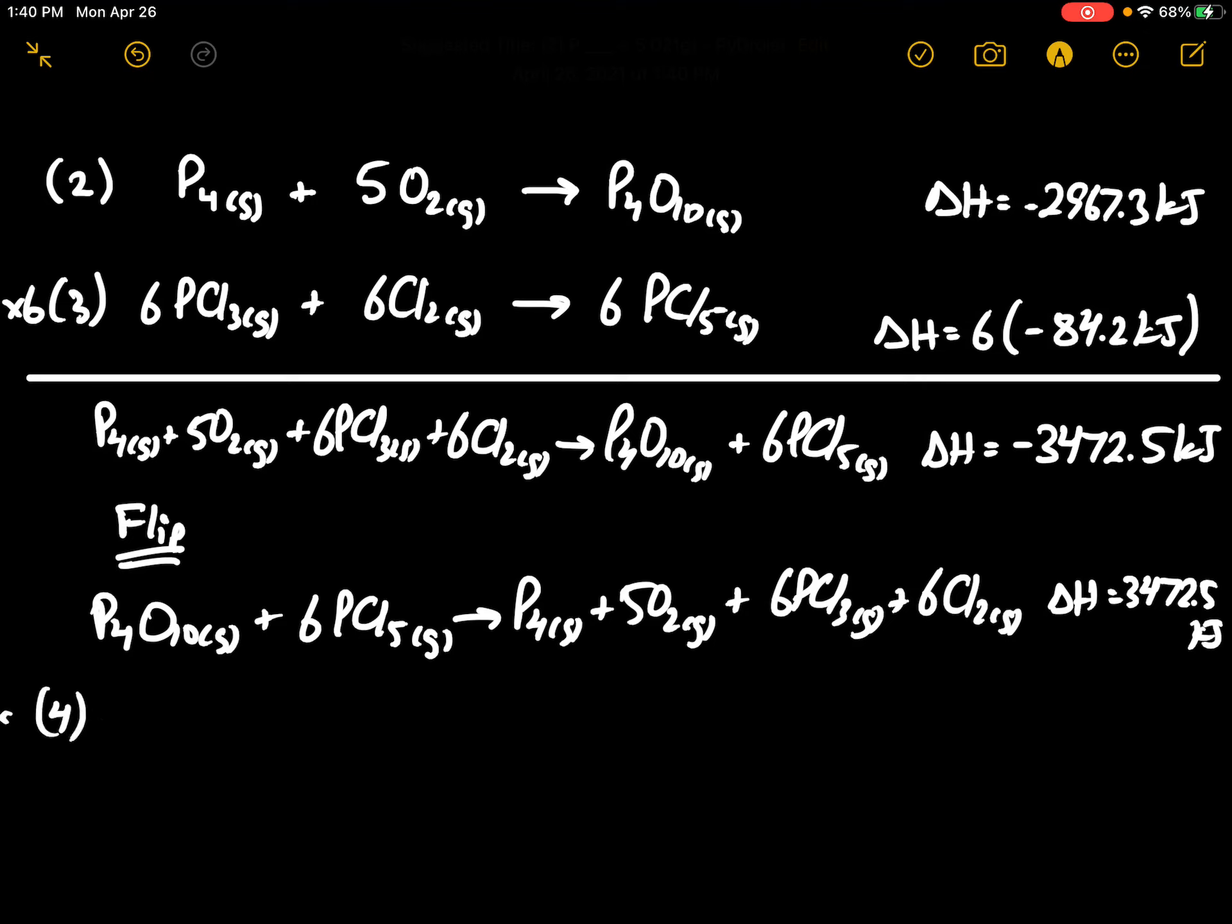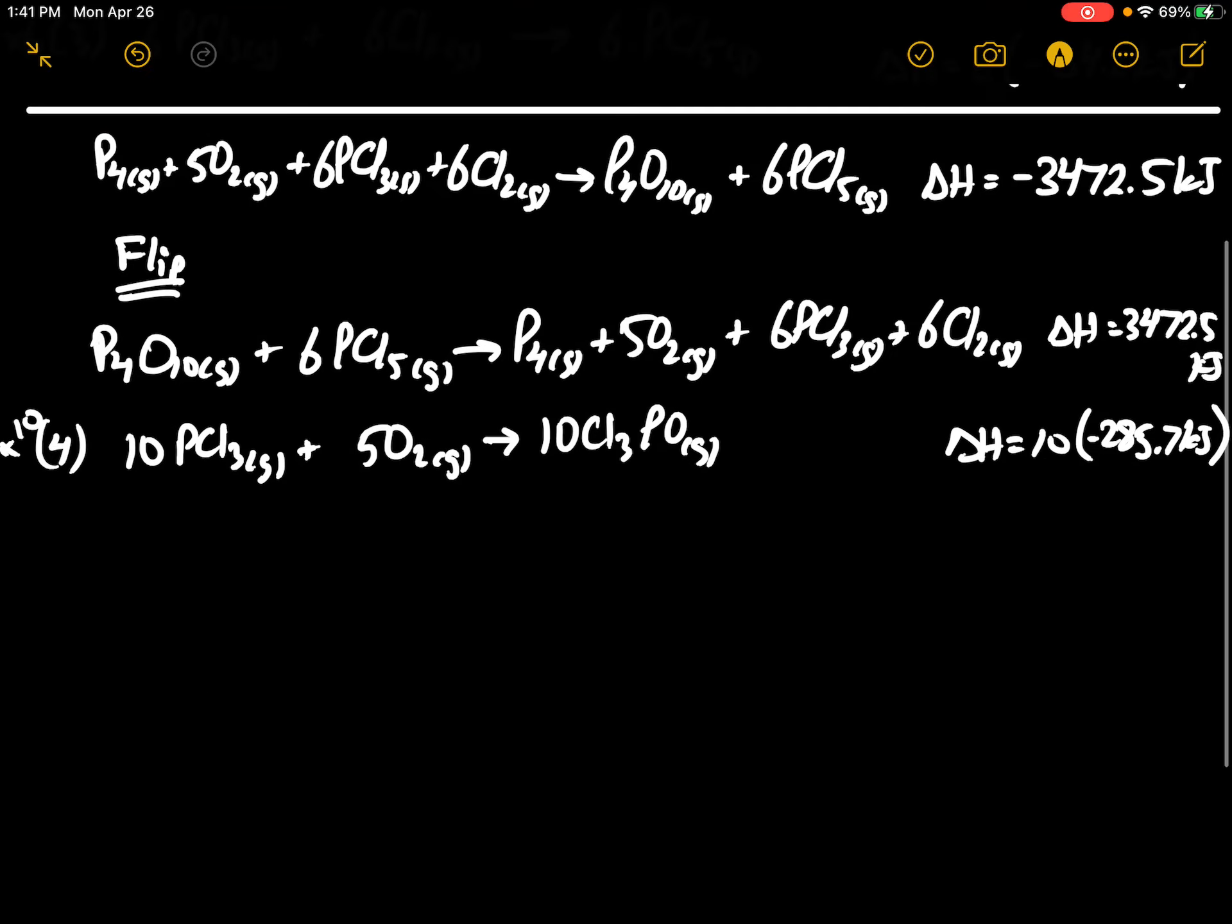Now we're going to bring in equation 4, but times 10, and this would give me 10PCl3 and 5O2. The delta H here would be 10 times negative 285.7 kilojoules.